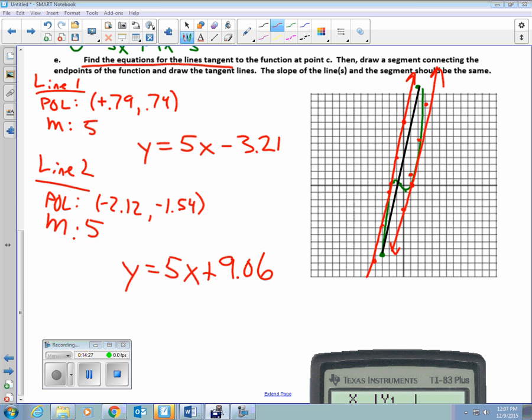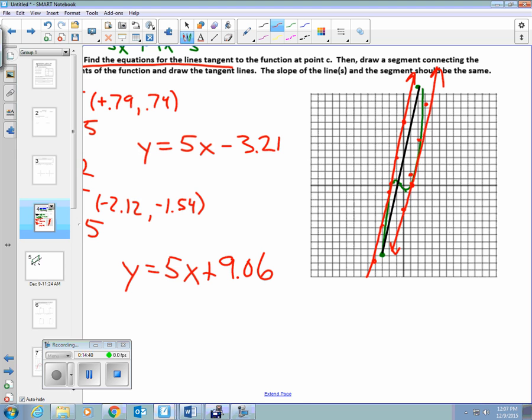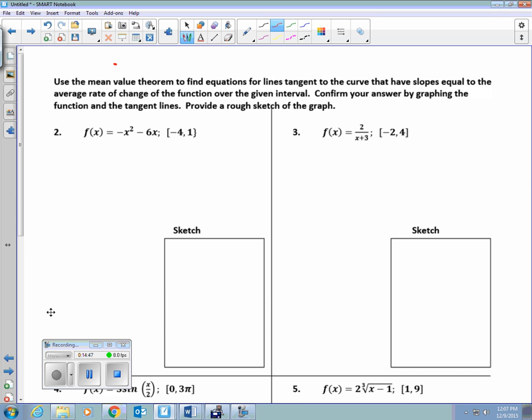So that's what we've done. We've found two lines whose rate of change is the same as the average rate of change of the function over that interval. Exactly. So let's try a problem that is not quite as involved. If you flip it over, we're going to get to problem 2 today, and then tomorrow we'll do 3, 4, and 5. And you have a worksheet that you'll be able to work on for a lot of the time tomorrow. So it says, use the Mean Value Theorem to find equations for lines tangent to the curve that have slopes equal to the average rate of change of the function over the given interval. Confirm your answer by graphing the function and the tangent lines. Provide a rough sketch of the graph.